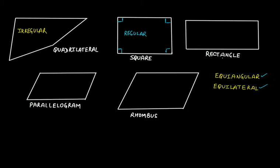This is a rectangle. We know that in a rectangle opposite sides are equal to each other and parallel, and all the internal angles are at 90 degrees. It is equiangular because all the internal angles are at right angle, but it is not equilateral because not all sides are equal — only the length sides are equal and the breadth sides are equal, but not all sides are equal.